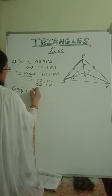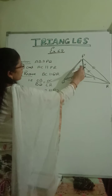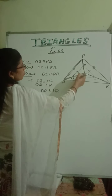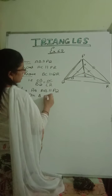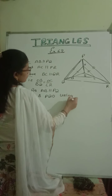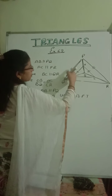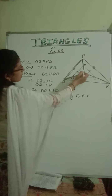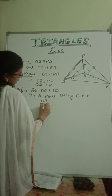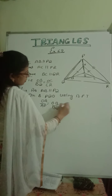Now proof. First, AB is parallel to PQ. So in triangle OPQ, using the basic proportionality theorem, because this side is parallel, the ratios will be the same. So that means OA upon AP is equal to OB upon BQ. This is equation number 1.